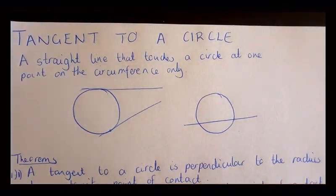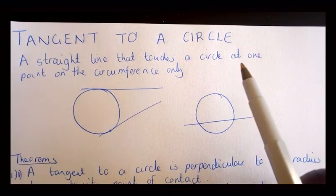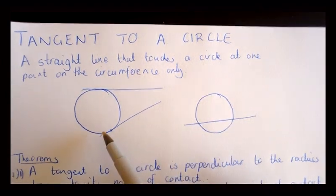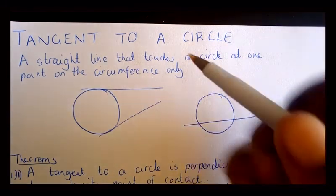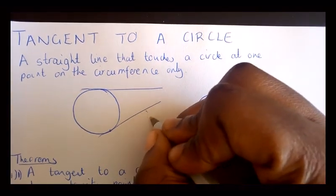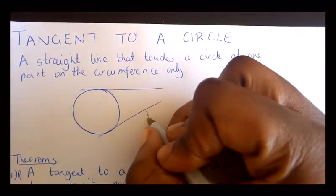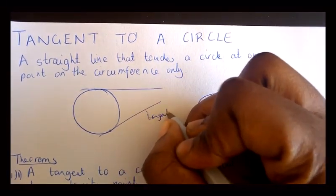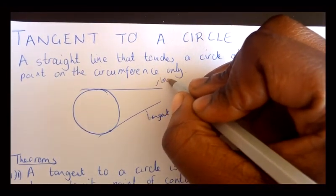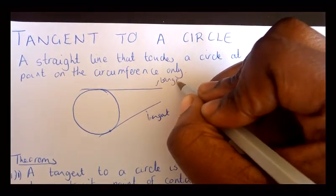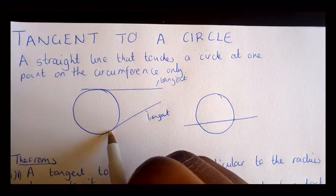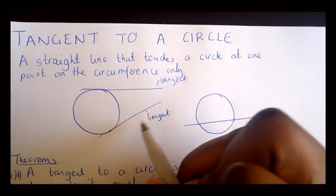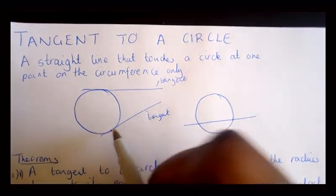A tangent to a circle is a straight line that touches the circle at one point only on the circumference. So this is a tangent, this is a tangent, and this is also a tangent, since they only touch the circle at one point on the circumference.